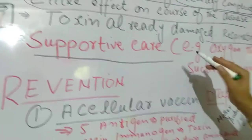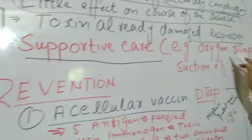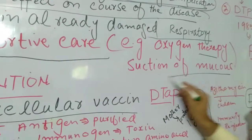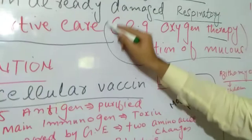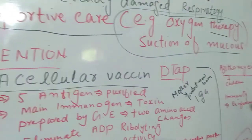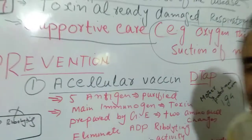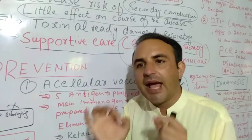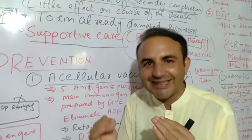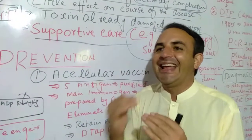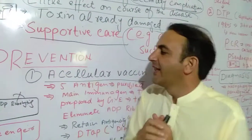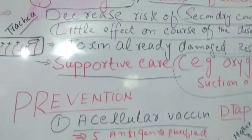Besides the antibiotic, you should also provide supportive care. Supportive care means you can provide oxygen therapy and suction of mucus from the trachea. This will help support the patient so they can breathe more easily and cough less.